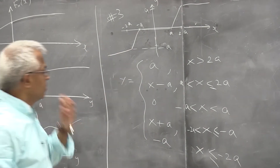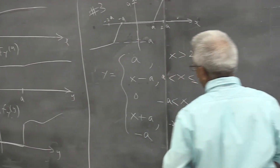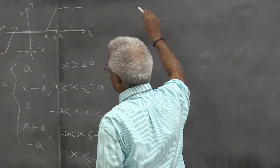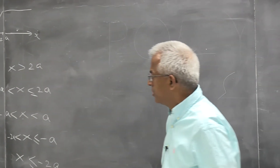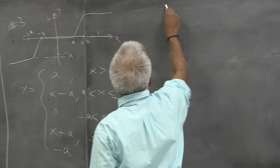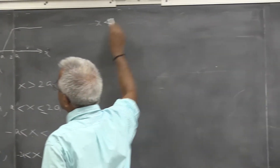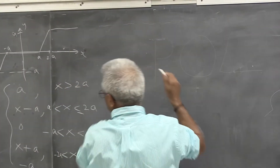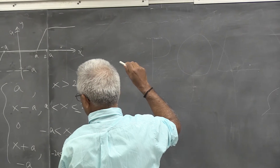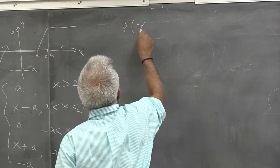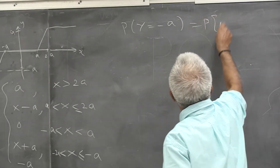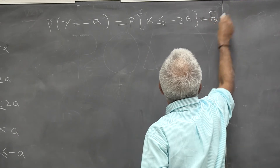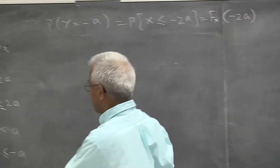So we can use this to derive the distribution function. For example, the probability of y equal to minus 2a — this is the distribution function evaluated at minus 2a from here.